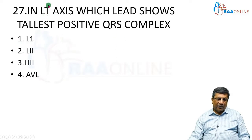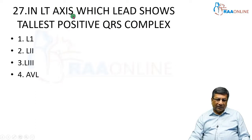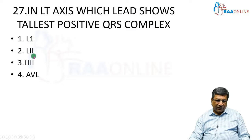Next, I am asking about left axis. In left axis, which leads show the tallest positive QRS complex? In left axis, the impulse has to travel towards the left-sided lead.